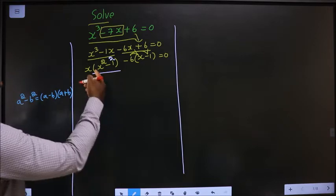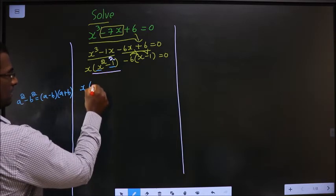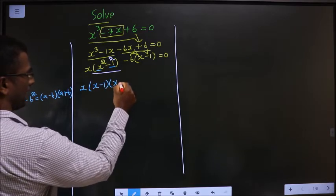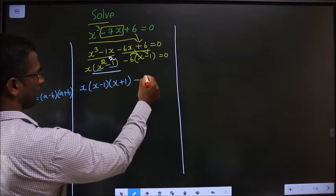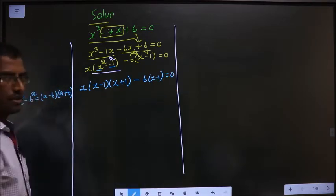Now here A is x, B is 1. So this will become x minus 1 times x plus 1 minus 6 times x minus 1 equal to 0.